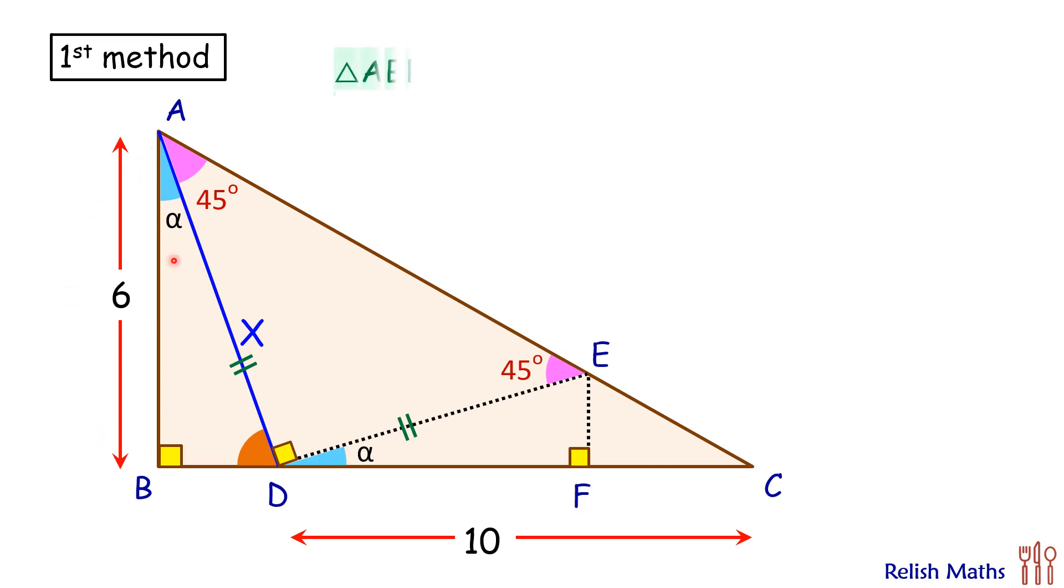Now if we look at triangle ABD, that's this yellow triangle, and triangle DEF, that's this blue triangle. In these triangles two angles are 90 and the angles are alpha, alpha, and one of the sides, AD and DE, are equal. Thus by angle angle side we have got these two triangles are congruent to each other.